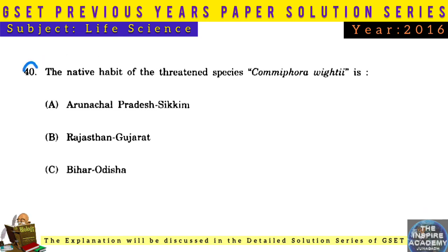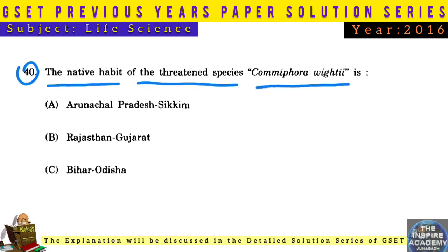Question No. 40: The native habitat of the threatened species Commiphora wightii is Rajasthan and Gujarat.